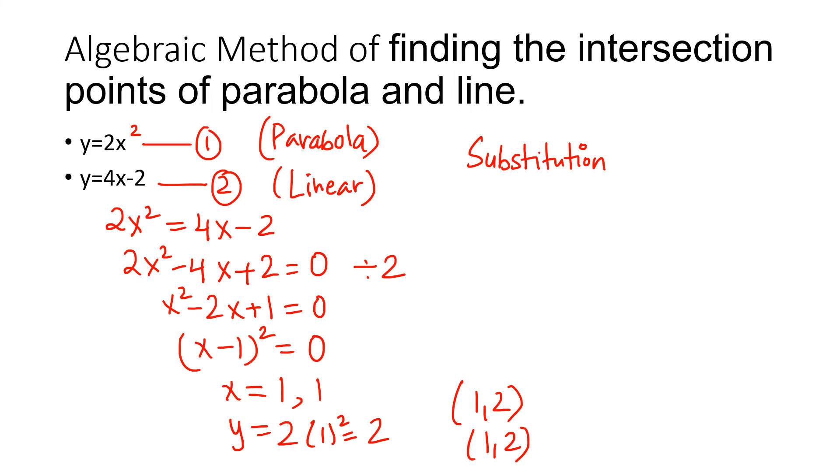Same answer you got from the graph for the intersection point, but here we just used the algebraic method of substitution. The identity I used in this step is (a minus b) whole squared, which is a squared minus 2ab plus b squared. Whichever method you find useful or easy, you can use that. Both will give you the same solution. If the name of any method is given in the question, you're going to use only that method.